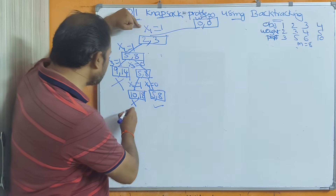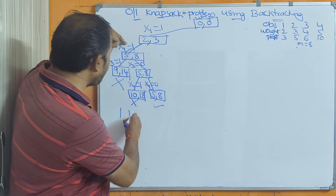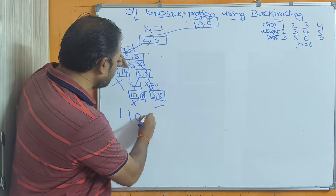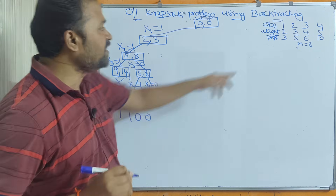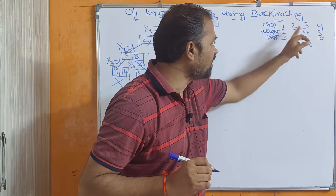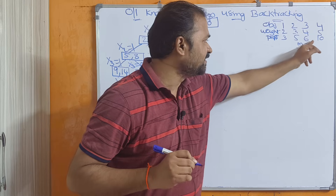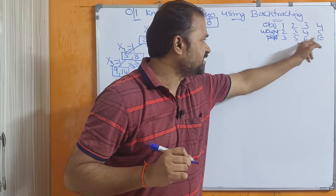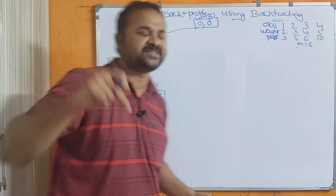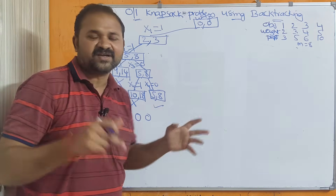The profit here is 8. The first solution vector is x1=1, x2=1, x3=0, x4=0, written as {1,1,0,0}. The profit is 3+5+0+0=8. We have to explore the remaining solutions as well.